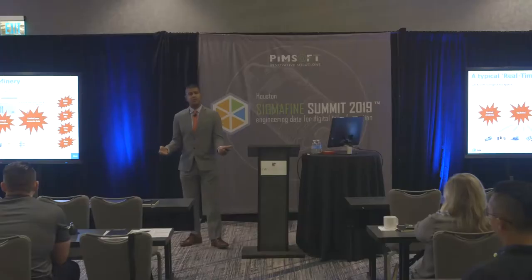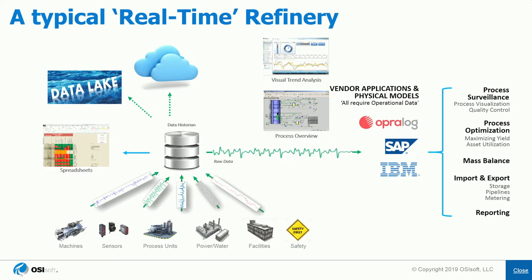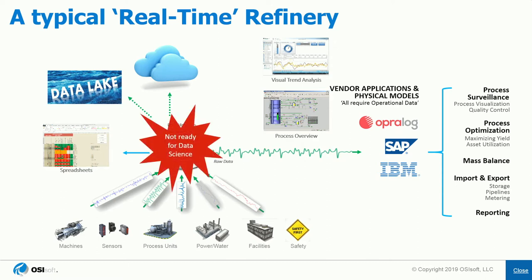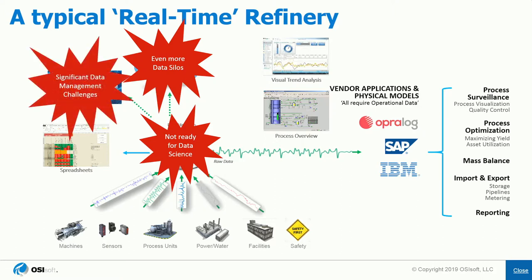So what's the solution? Do we just take all our flat tags and dump them into the cloud or a data lake? There are problems with that. The data historian part of Pi is not built or ready for data science — there are other parts of the Pi system that are. If you're just taking flat tags from your data historian up to the cloud, you're creating even more data silos. Cloud platforms and data lakes typically don't have any idea of data context, data structure, data quality, or data hierarchy, so you're creating a bunch of data management challenges.